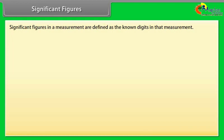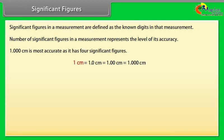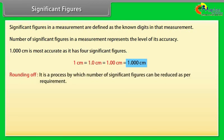Significant figures. Significant figures in a measurement are defined as the known digits in the measurement. Number of significant figures in a measurement represents the level of its accuracy. It means more the number of significant figures in a measurement, more accurate that measurement is. Let us take an example: 1.000 centimeter is most accurate as it has 4 significant figures.